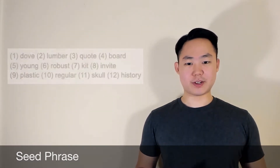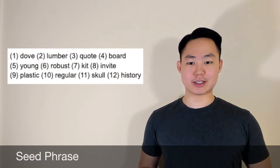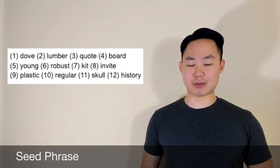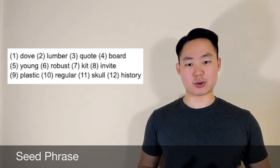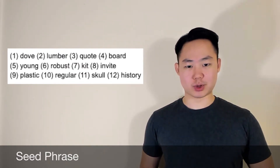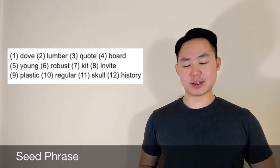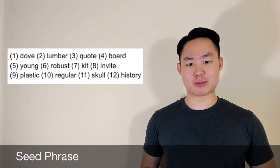A seed phrase is written in plain English and is a user-friendly representation of a private key. It's an ordered sequence of usually 12 or 24 words, and the chances of you sharing the same seed phrase as someone else are pretty much nil.